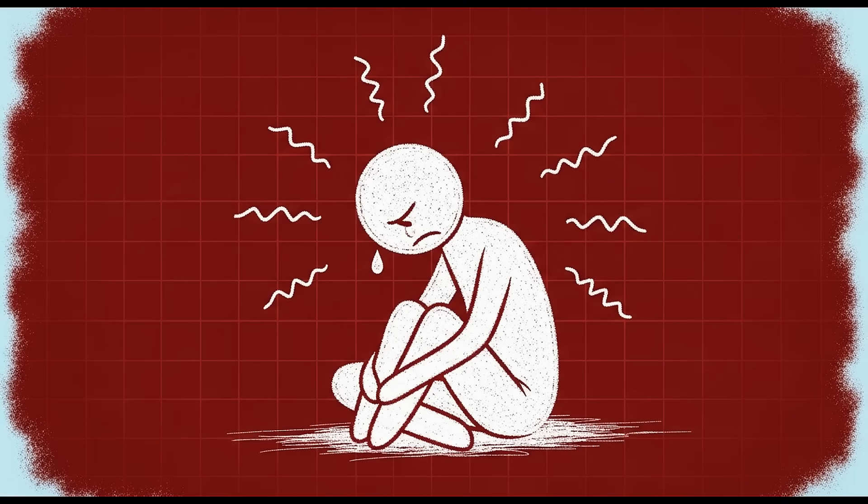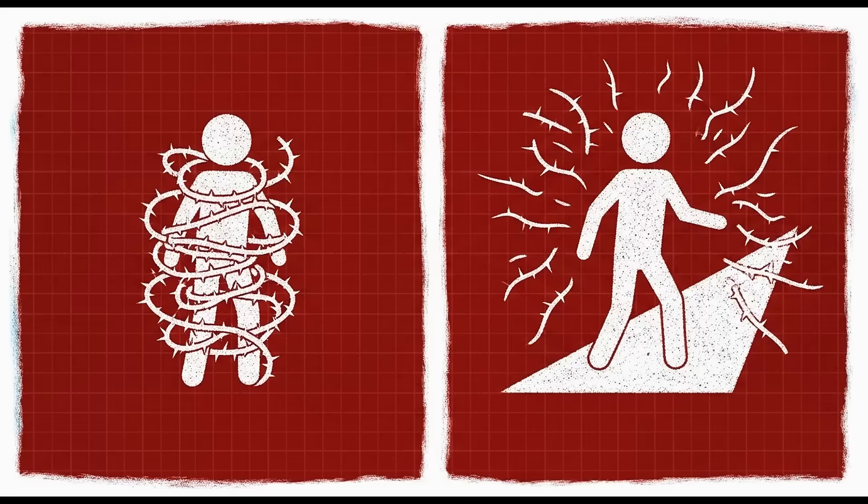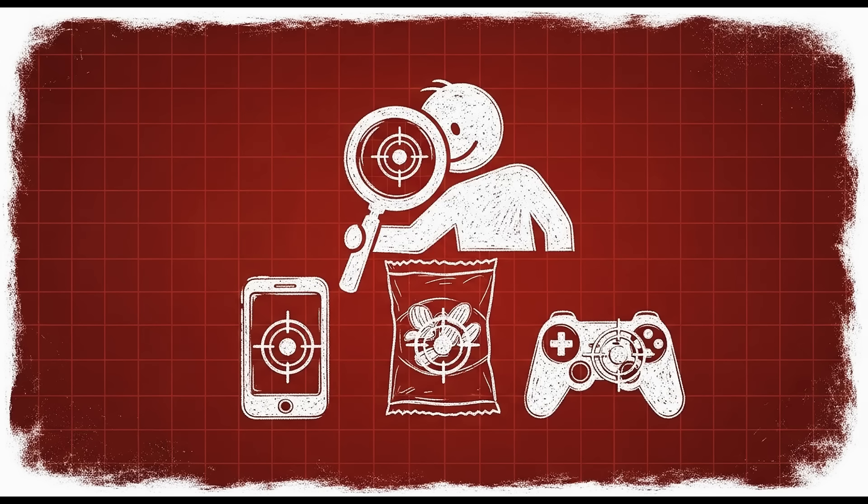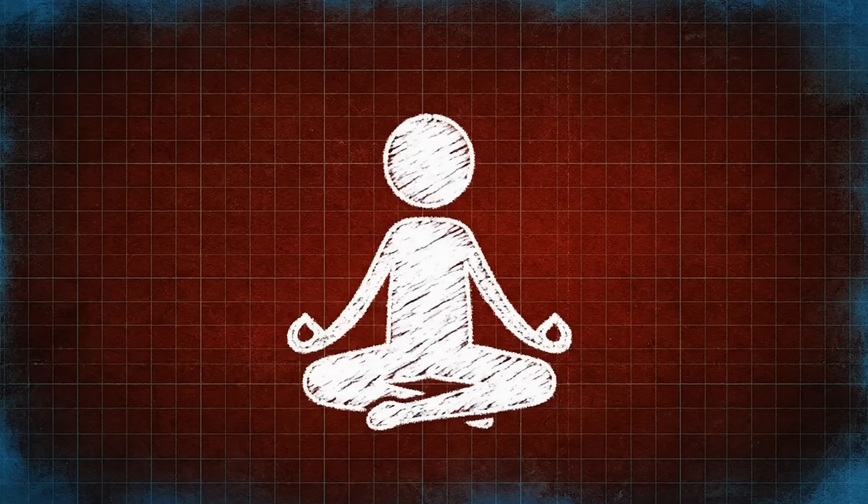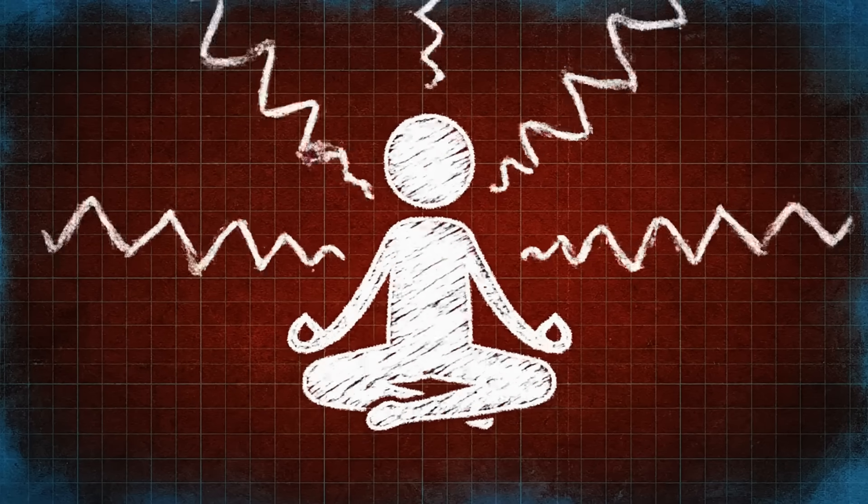This is why people who spend hours on social media often feel the most unmotivated. Their brains have been trained to expect constant, effortless rewards. Anything requiring sustained attention feels like punishment by comparison. The effort-to-reward ratio is all wrong. Your brain has been recalibrated to crave instant gratification, and real achievement can't compete with that.